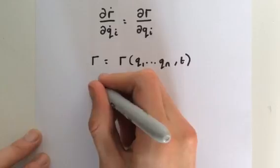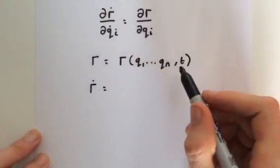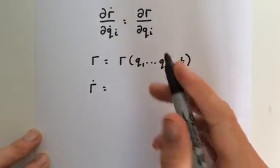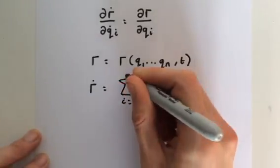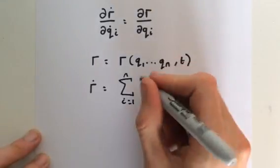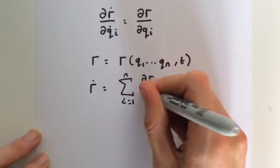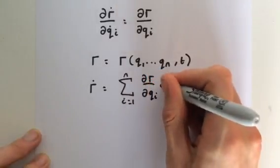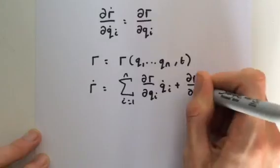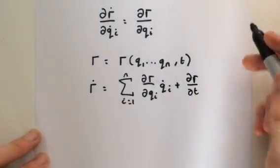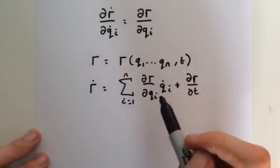We can differentiate this to find the transformation equations for our velocity. So r dot — when we differentiate, summing i equals 1 to n, we use the multivariable chain rule: we get the partial derivative of r with respect to qi times q dot i, then we add the partial derivative of r with respect to t. That's r dot.